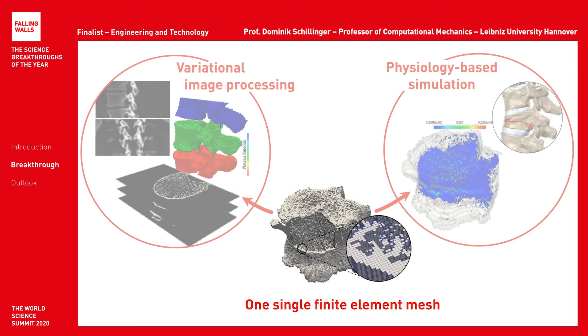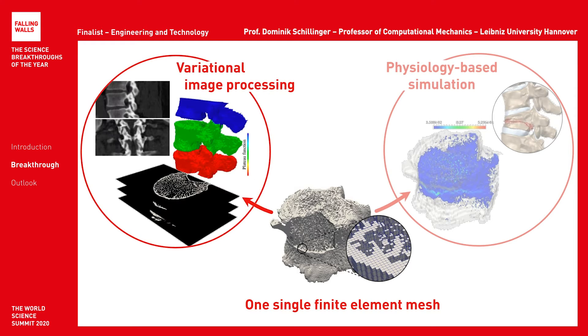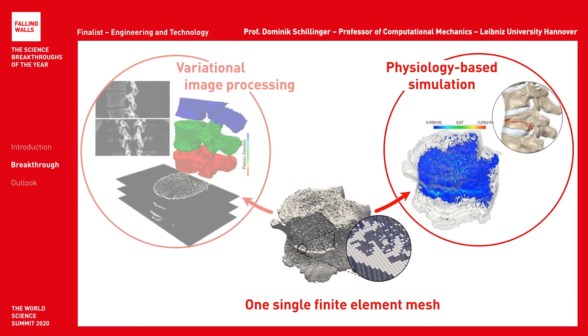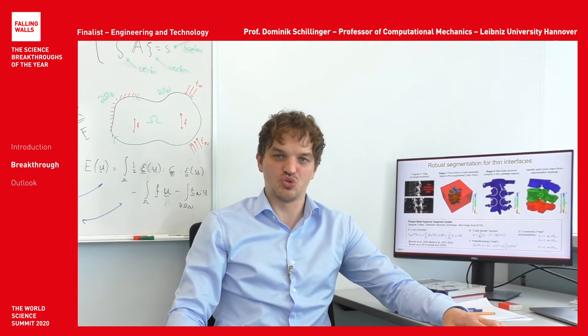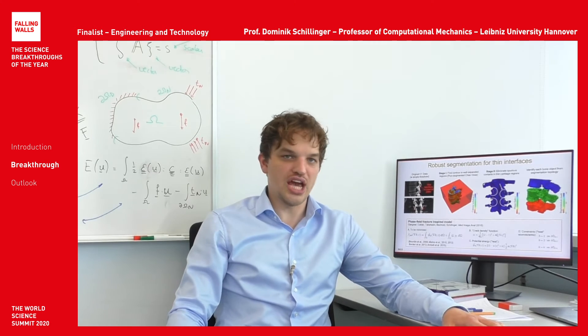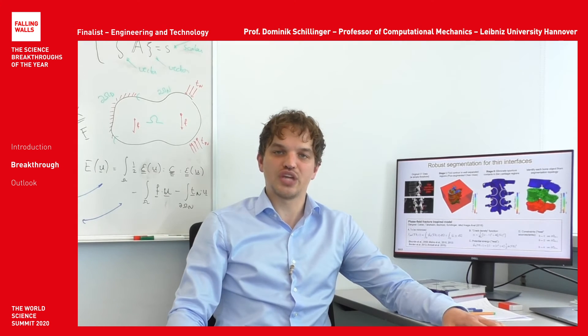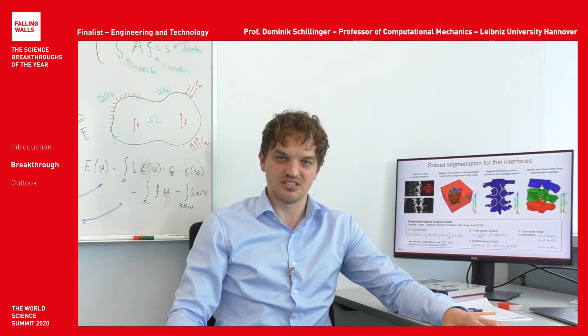Our core idea is to use one single computational mesh and the underlying finite element technology for all these tasks, naturally linking image analysis and physiology-based simulation. We derive that mesh directly from the raw imaging data by assigning one hexahedral element to each voxel. Each element in the mesh is directly informed by imaging data, for instance to calibrate multi-scale material models.